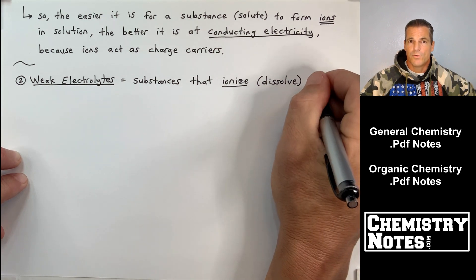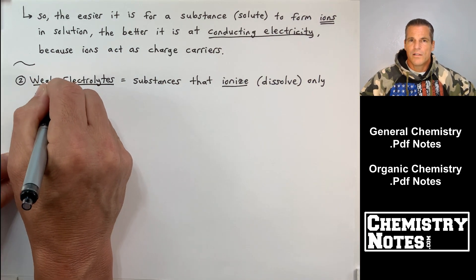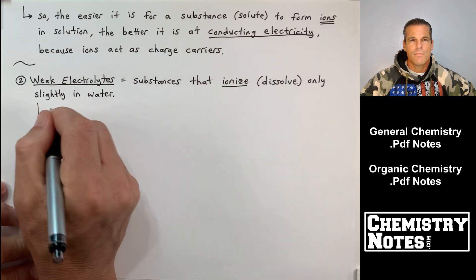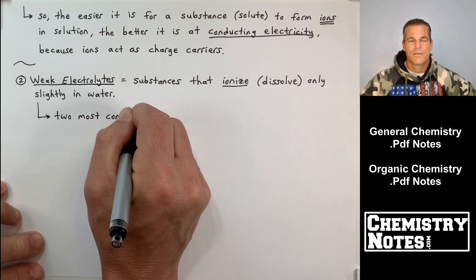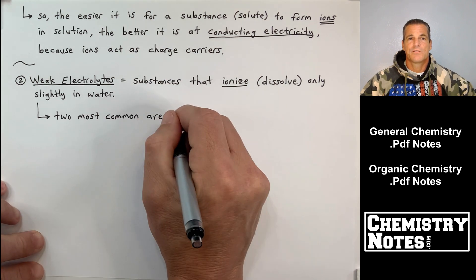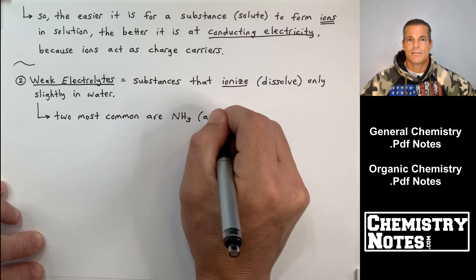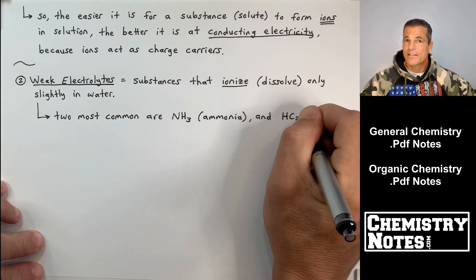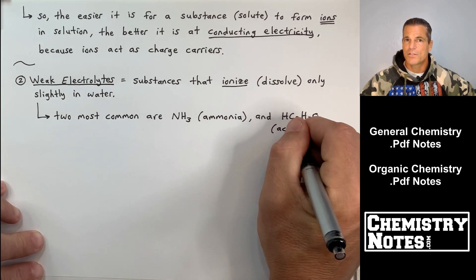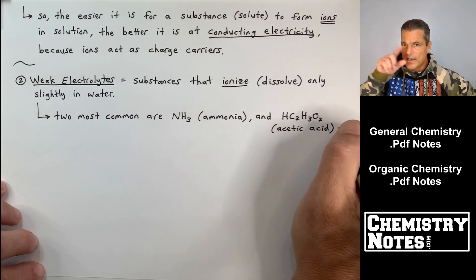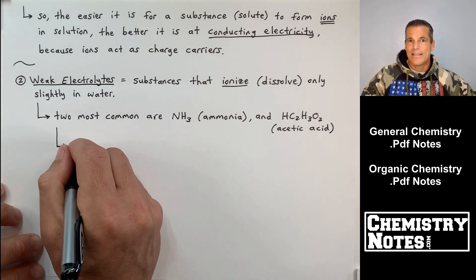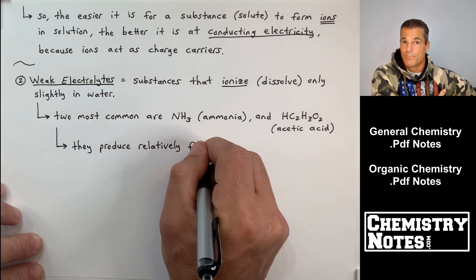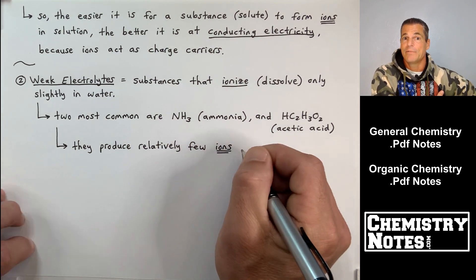And ions, if you remember from last video, are the little charge carriers where the two electrodes go into the beaker of water, or the beaker of the solution, and it completes the circuit and lights up that light bulb really bright. So number two. Well, if a strong electrolyte has 100% ionization, weak electrolytes, maybe not so much.